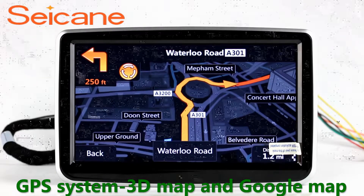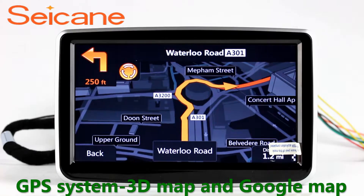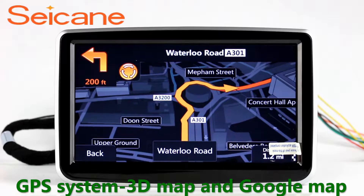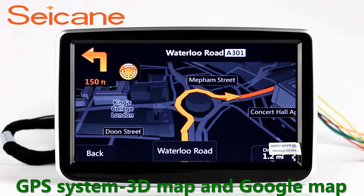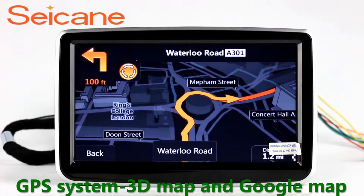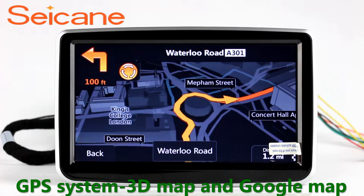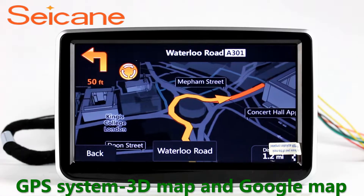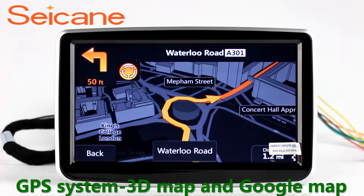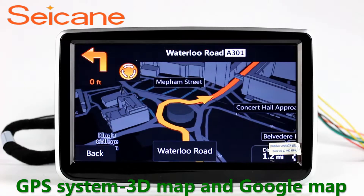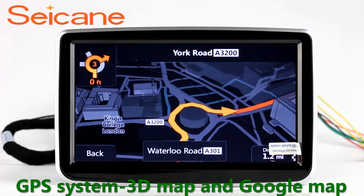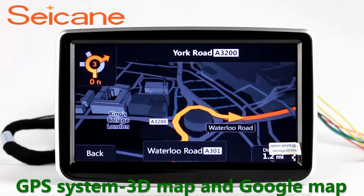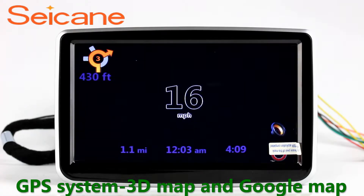GPS. Go to the main menu and open the GPS system. The 3D navigation map shows you accurate GPS locations and route information. It also supports Google Maps. You will never get lost with this function.